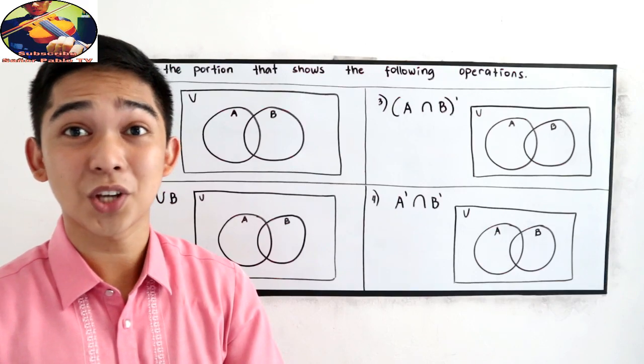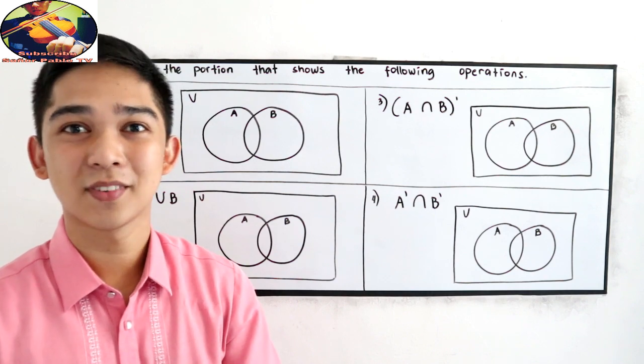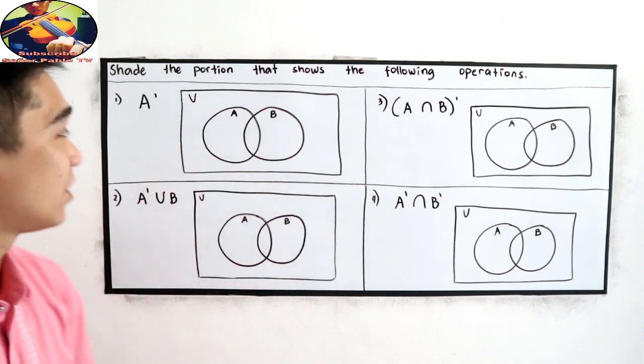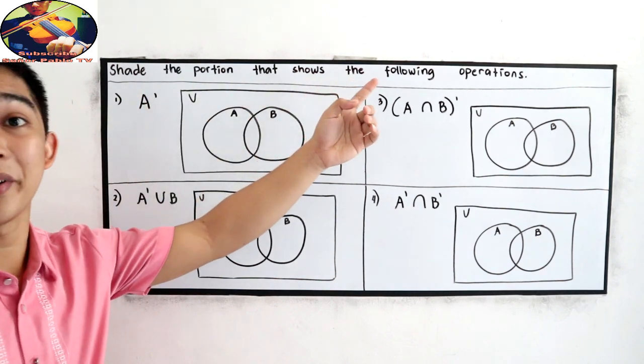And now let's try to shade our operations in our Venn diagram. So we have direction, shade the person that shows the following operations.